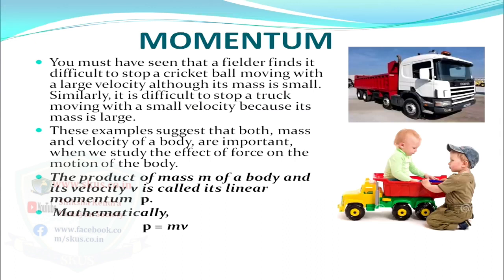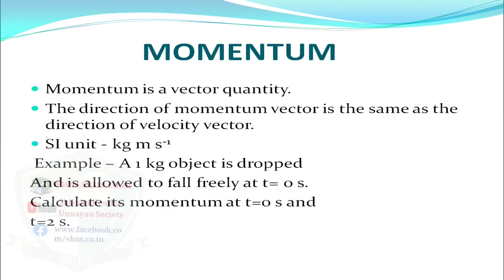Now let us discuss momentum. A fielder finds it difficult to stop a cricket ball moving with large velocity although its mass is small. Similarly, it is difficult to stop a truck moving with small velocity because its mass is large. But it is easy to stop a toy truck because its mass is less. From these examples, both mass and velocity of a body are important when studying the effect of force on motion. The product of mass M and velocity V is called linear momentum P, so P = MV. Momentum is a vector quantity with direction the same as velocity, and its SI unit is kg·m/s.